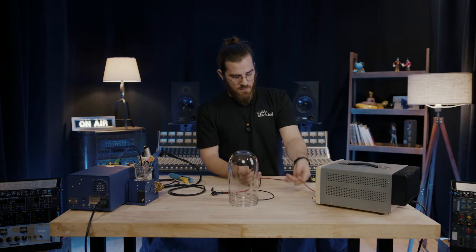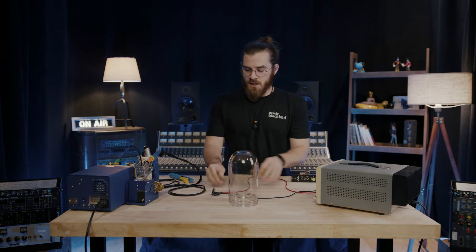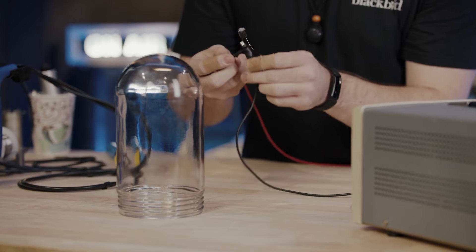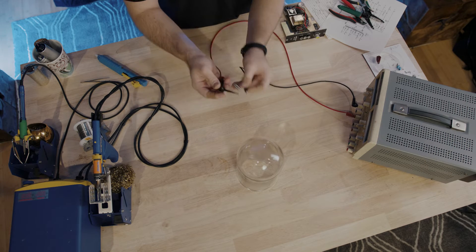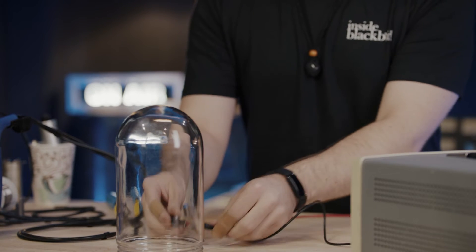I'm going to hook up the red to the positive and the black to the negative on my power supply. I have the positive side from the power supply hooked up to the negative side of my capacitor, and I have the negative side hooked up to the positive side of the capacitor.